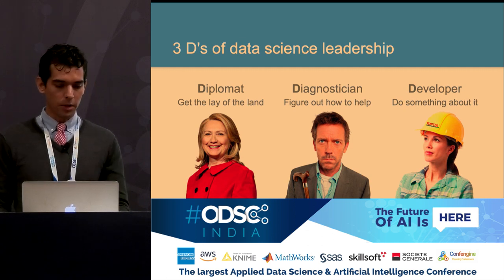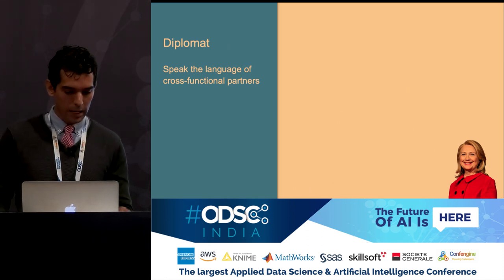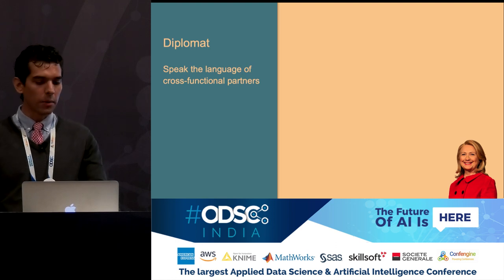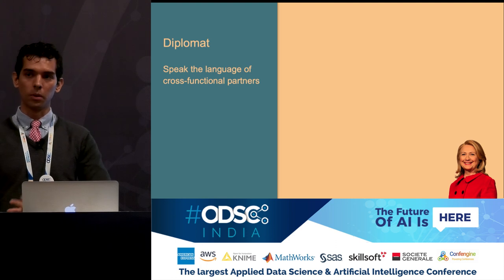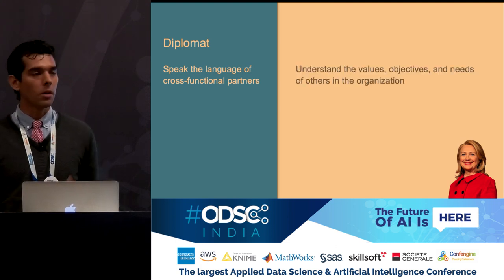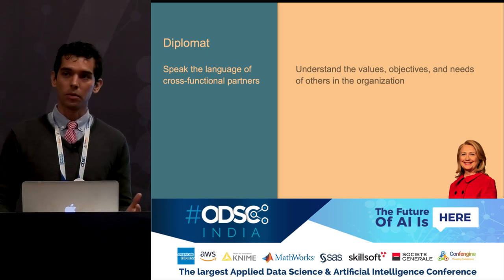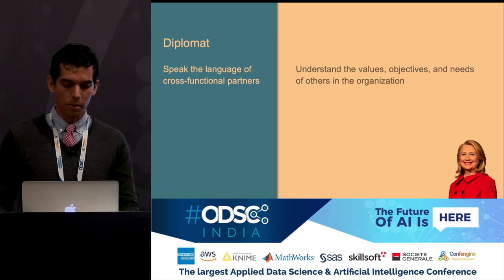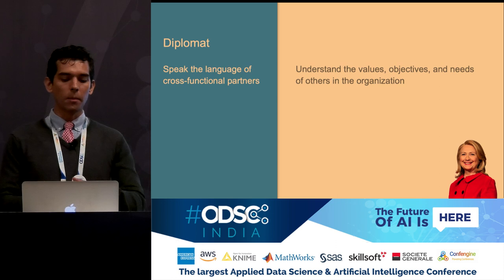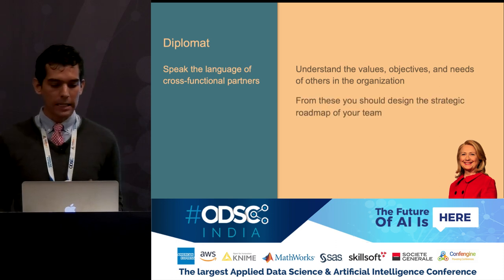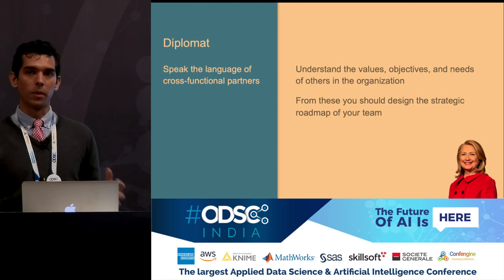Jumping into the first D — diplomat — there are three things to call out. As a diplomat, you as a data science leader need to speak the language of your cross-functional partners. Data science likely works in conjunction with many other organizations in the company. You need to understand their values — what matters to them — their objectives, what they're trying to accomplish, and their needs, where they're struggling and where they need help. From these three things, you can design a strategic roadmap for a data science team that is informed by where the organization and company are.